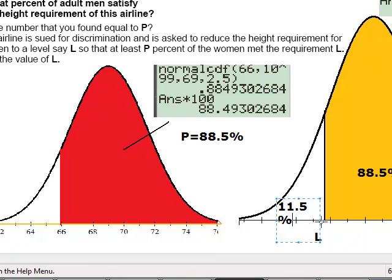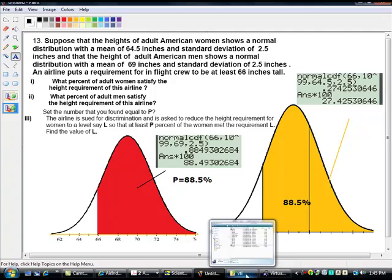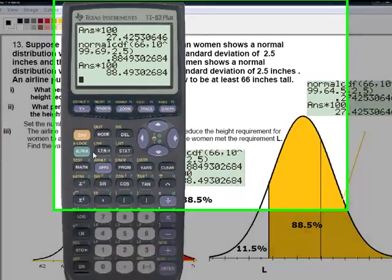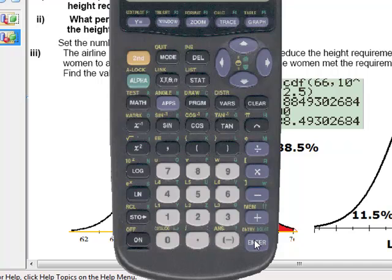This is what we have to do. Get the calculator back. And then, what do I choose now? Inverse. Which percentile? 11.5. How do I write it in there as a proportion? 0.115. And then for the women, what we got? 64.5. The deviation is 2.5. So, the answer is?